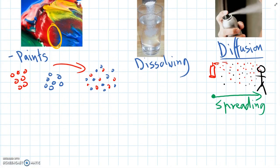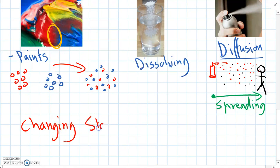And there's one more main type of physical change, and that's changing the state of matter. And we'll look at that in the next video.